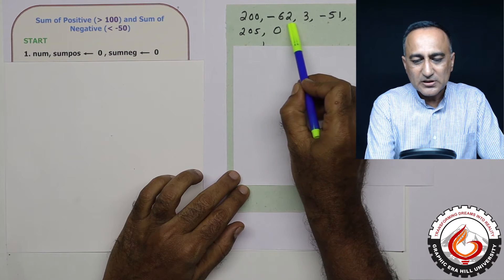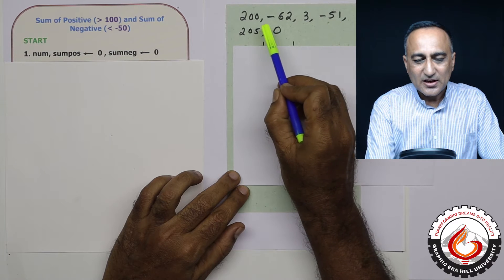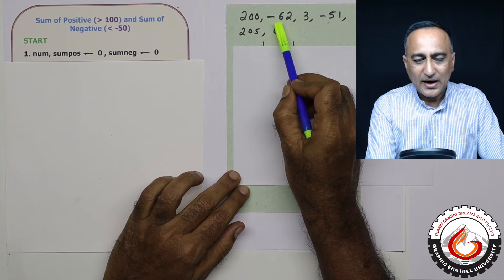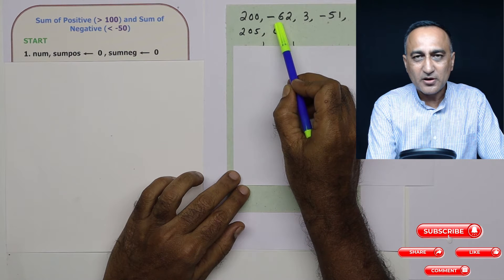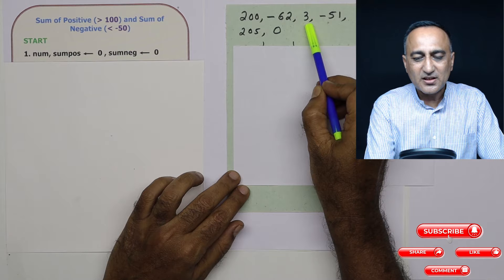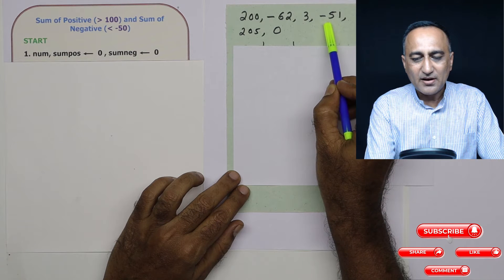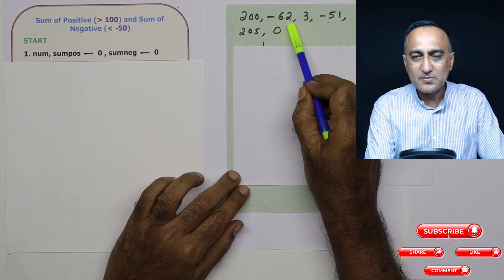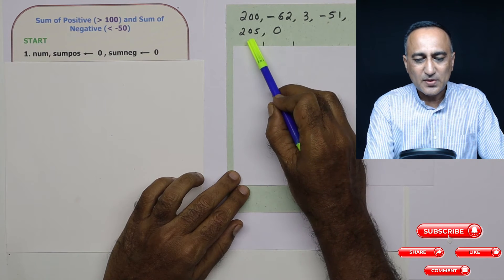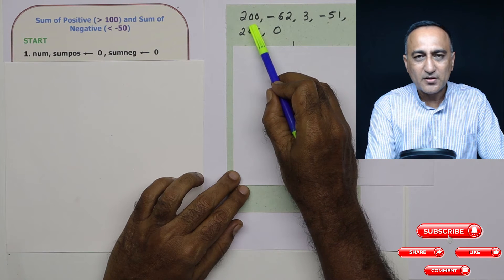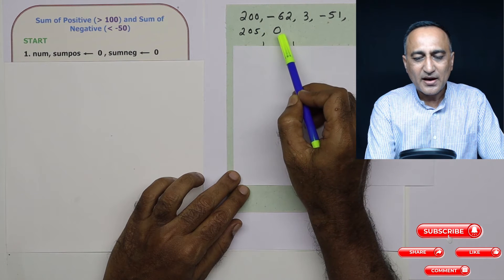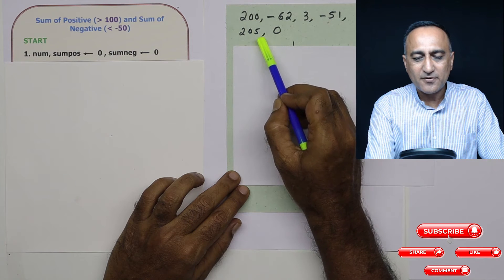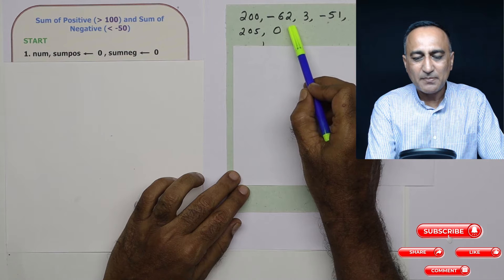Suppose your input looks something like this. I will take 200 and add it to the sum of positive numbers. I will take minus 62 and add it to the sum of negative numbers. I will not consider 3 because it is not greater than 100. I will take minus 51 and add it with minus 62, so it becomes roughly minus 113. Then when I see 205, I add it to 200, so it becomes 405. And when zero is entered, I will print the sum of positive numbers as 405 and the sum of negative numbers as minus 113.